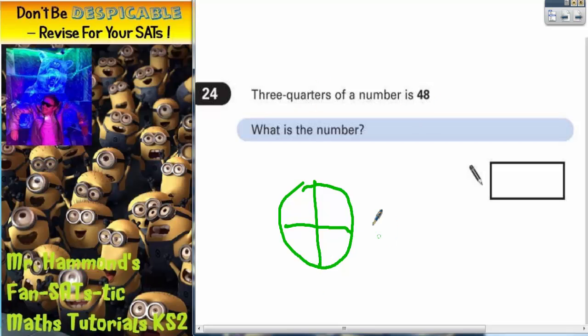Now three quarters is 48. So these three quarters together, not including the final quarter, must be equal to 48. But there's three of them. So if three quarters is 48, the question is, what happens if you split the three quarters to get one quarter?